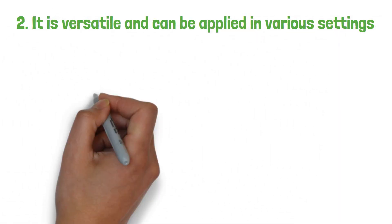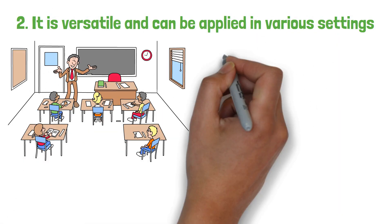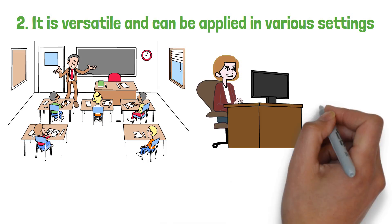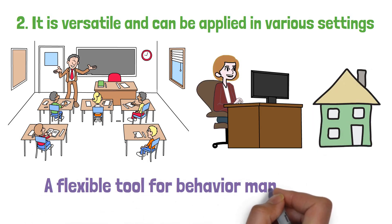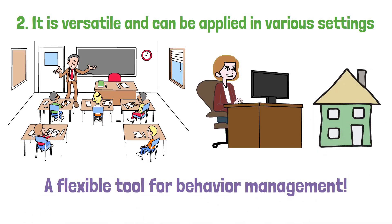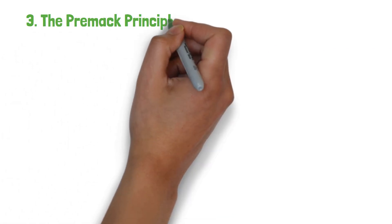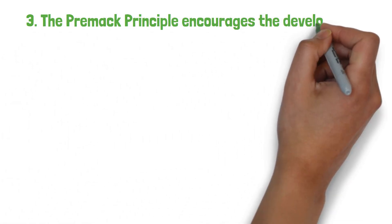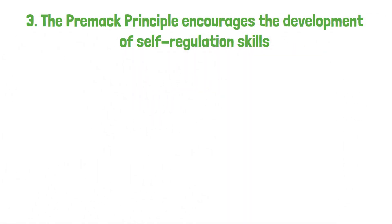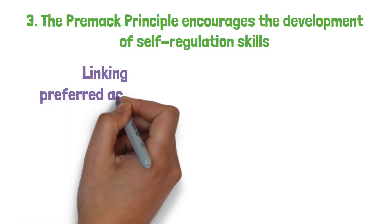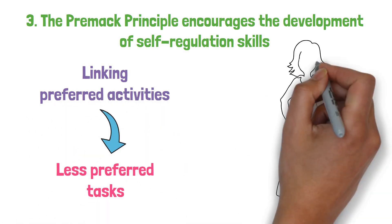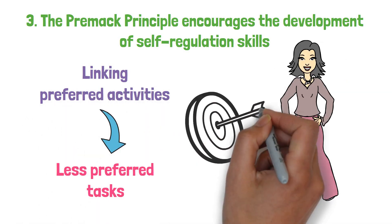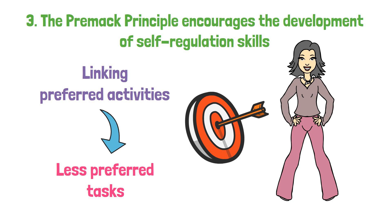Secondly, it is versatile and can be applied in various settings — from classrooms to workplaces to homes — making it a flexible tool for behavior management. Thirdly, the Premack principle encourages the development of self-regulation skills. By linking preferred activities with less preferred tasks, individuals learn to manage their behavior to achieve desired outcomes.